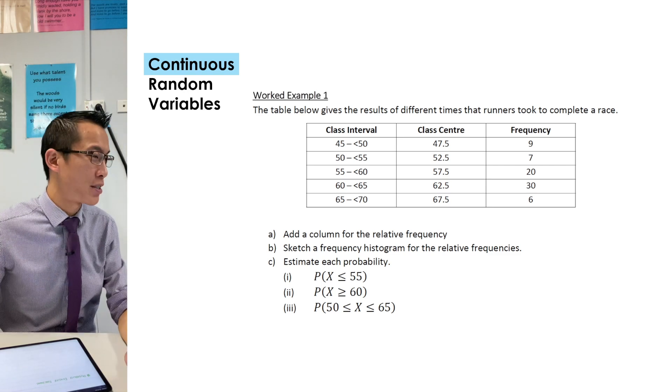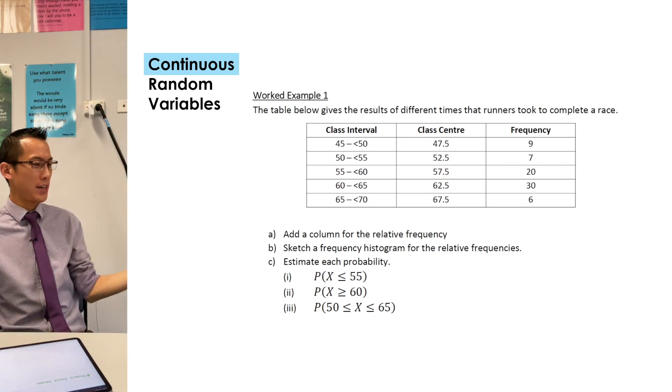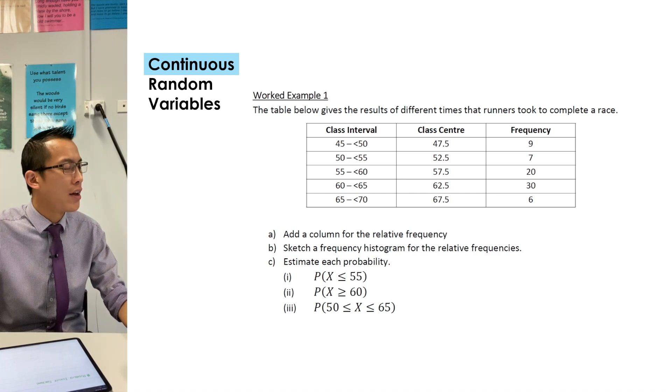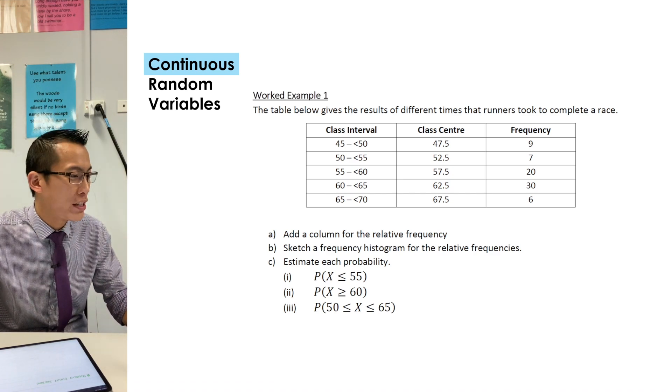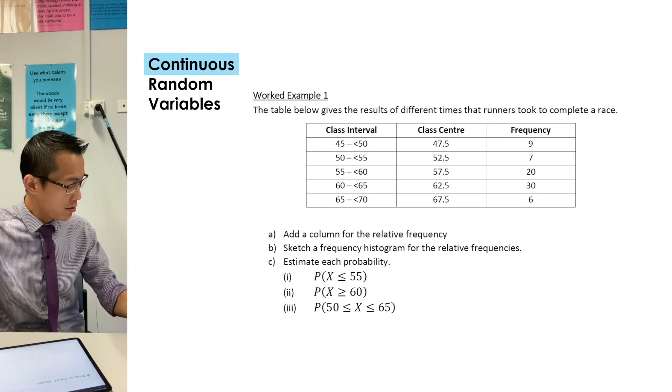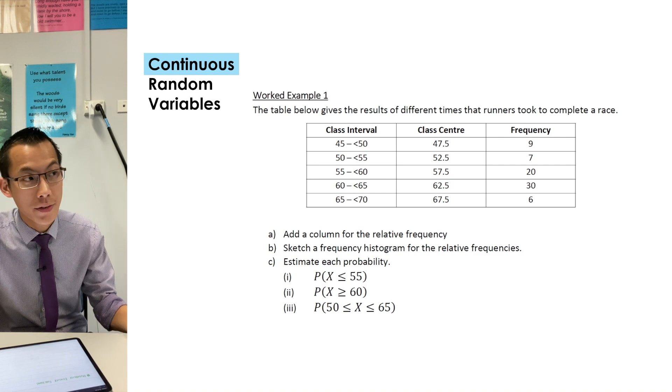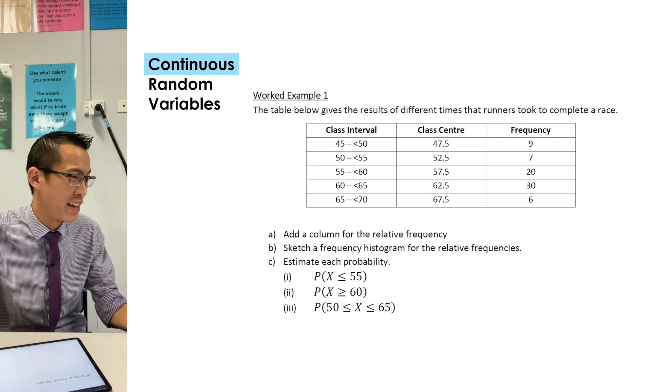Okay, so let's pick up where we left off. Let's first have a look at this worked example and the relative frequencies. So like I mentioned before, all you're really going to do is take the frequency, which is already provided, 9, 7, 20 and so on, and then you are going to divide by the total number, which I think you've all calculated as 72.